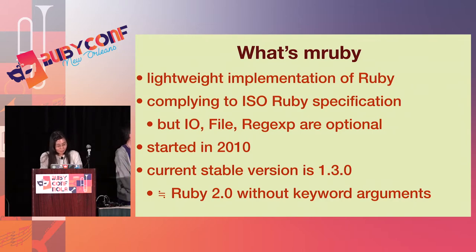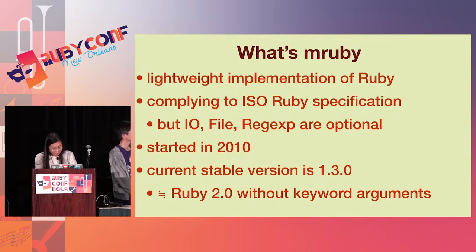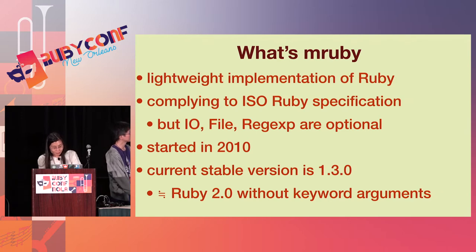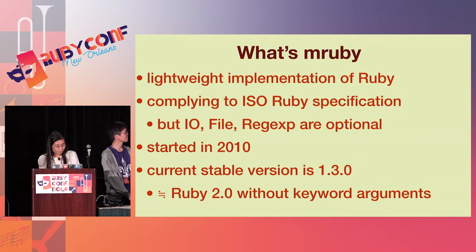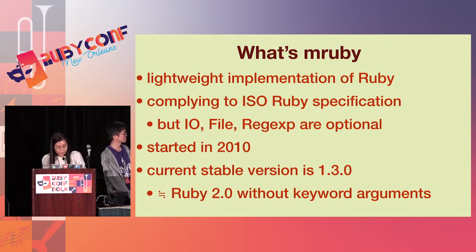It complies with the ISO Ruby specification, but some classes like IO and File are not included. You can use these classes with an official library. The current stable version is 1.3.0. The syntax of MRuby is similar to Ruby 2.x, but keyword arguments are not supported yet.